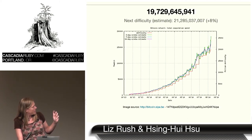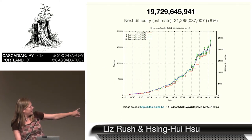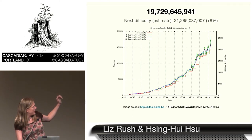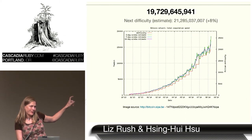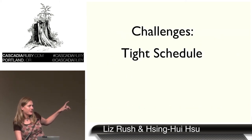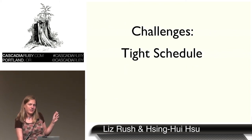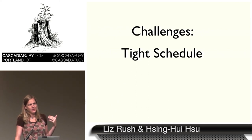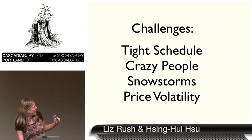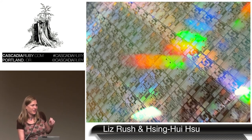Part of why we went bankrupt: when we were selling machinery, the difficulty rate was tiny — less than one petahash. Now we're at 16 petahash. Around March, April, May it got really hard to sell equipment to people because they'd say 'I have no idea when I'm going to be able to make any money.' That's about when we ran out of money. Challenges: tight schedule — it's hard to ship software on time, imagine shipping hardware. And imagine your product loses its value by 60% per month. There were also crazy people, snowstorms, fires, price volatility. Come find me after if you're interested in those stories. Thank you.